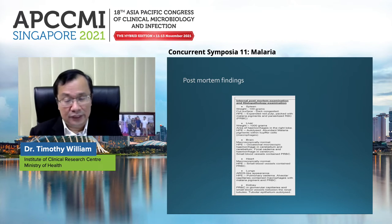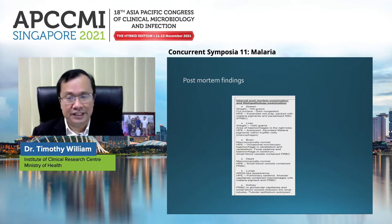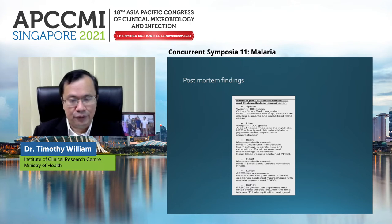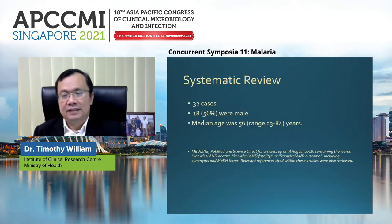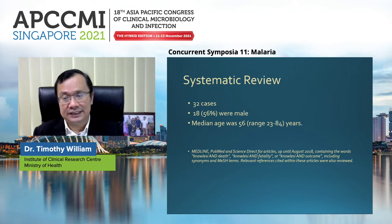We were fortunate to obtain a post-mortem of one of these patients, and we found malaria parasites in almost all the organs — the skin, liver, brain, heart, lungs, and kidneys. So the parasite was totally and abundantly spread throughout the entire body. We also did a systematic review on all reported deaths due to P. knowlesi malaria.